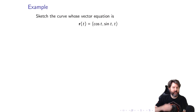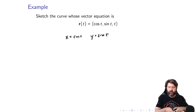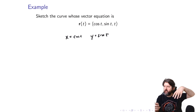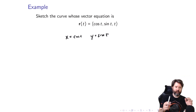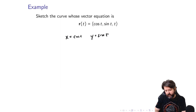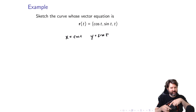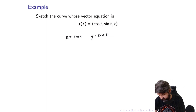Sketch the curve whose vector equation is R of T equals (cos T, sin T, T). If you only had X equals cosine T and Y equals sine T, that would give you a circle. But this curve is also changing height — as T grows, it keeps making circles around the Z axis while the height increases. So what you actually have is a spiral, or what we call a helix.